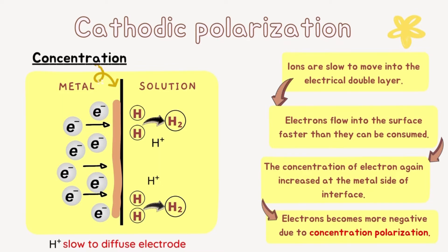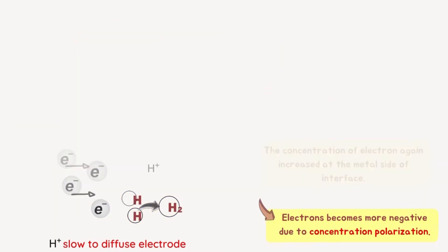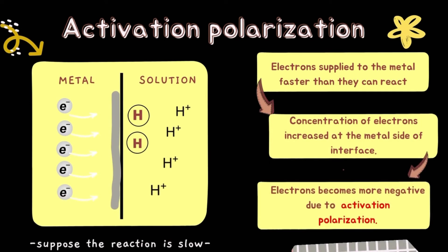So, electrons become more negative due to concentration polarization. Then, for activation polarization, electrons supplied to the metal faster than they can react. Concentration of electrons increased at the metal side of interface. Electrons become more negative due to activation polarization.